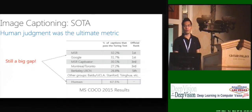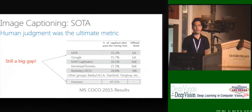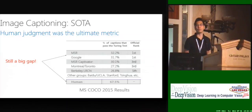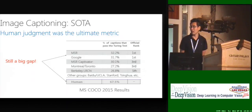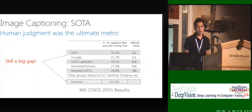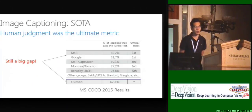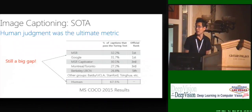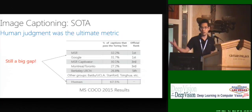Most papers report results on automatic metrics such as BLEU and METEOR. However, the ultimate metric should be human judgment. At the MS COCO image captioning challenge last year, the metric used to rank the entries was the Turing Test, which is a human judgment. One of the co-winners of the challenge, the MSR entry, didn't have a very high BLEU score, but it was still one of the winners because it had a very high human judgment score.